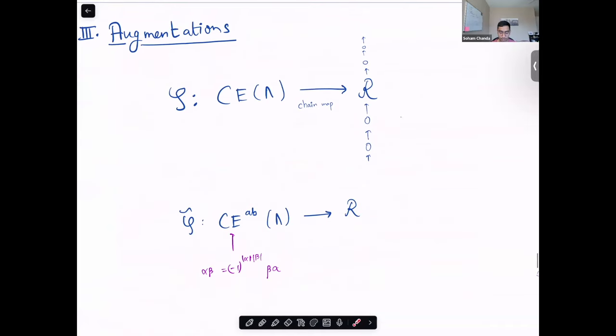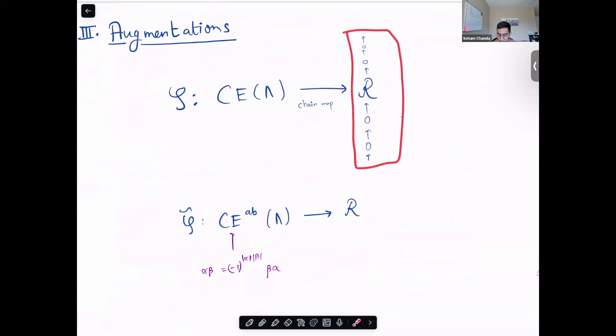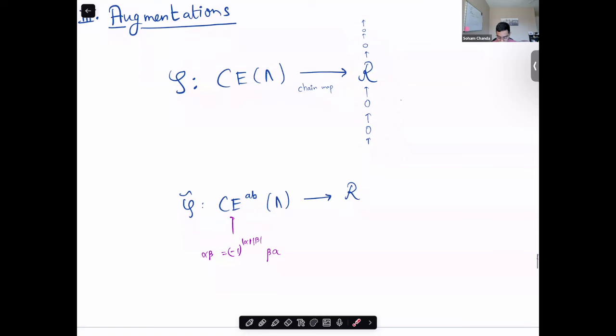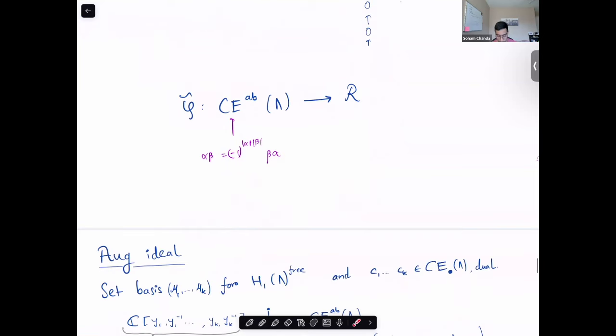So, now I'll go towards how to define the augmentation variety. Recall that an augmentation is just a chain map from the DGA to any ring R, where I view this ring as a chain complex, which is just concentrated on grading zero, and every other grading is just trivial. This can descend to the graded abelianization, if I assume that R is abelian.